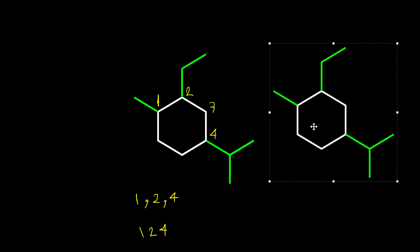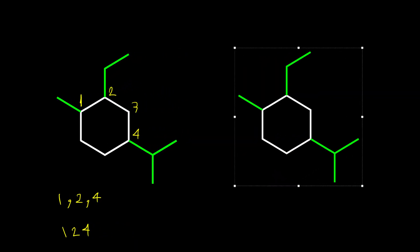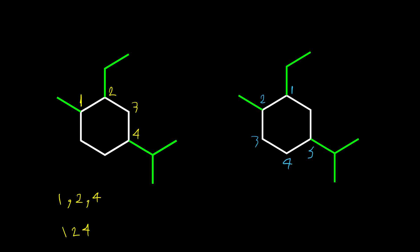For the second possibility, if I choose number one on the point of attachment of the ethyl group, then going counterclockwise is closer to the second group: two, three, four, five. The branches are on carbons one, two, and five: giving 1,2,5. Comparing 1,2,4 and 1,2,5 — 1,2,4 is lower — so our choice is the first numbering.